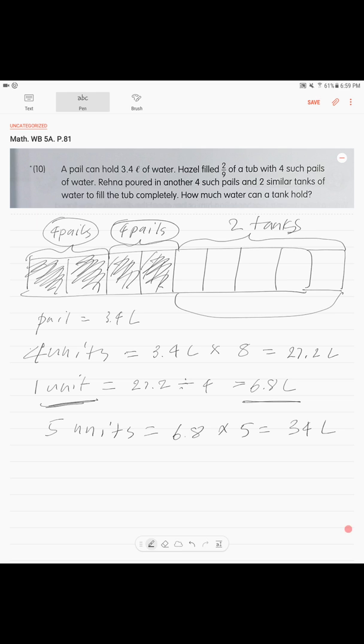And because there were 2 tanks of water, we take this 34 liters, we divide it by 2 tanks and we get 17 liters. So, this is your answer, a tank can hold 17 liters of water.